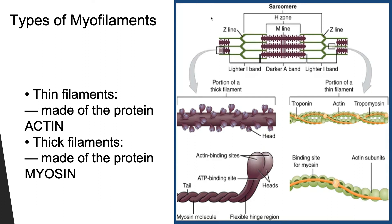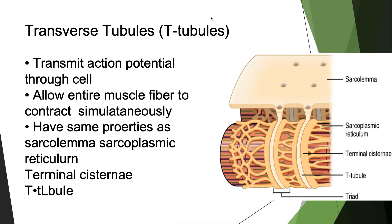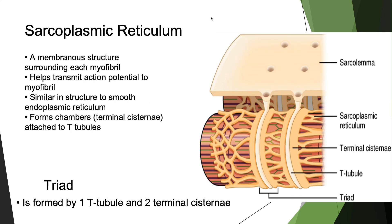The types of myofilaments are the thin myofilaments, which are made of actin, and the thick myofilaments, made of myosin. Transverse tubules help to transmit the action potential through the cell and allow the entire muscle fiber to contract simultaneously. The sarcoplasmic reticulum is a membranous structure that surrounds each myofibril. It also helps to transmit the action potential, and is similar in structure to the smooth endoplasmic reticulum, forming chambers called terminal cisternae that attach to the T-tubules.